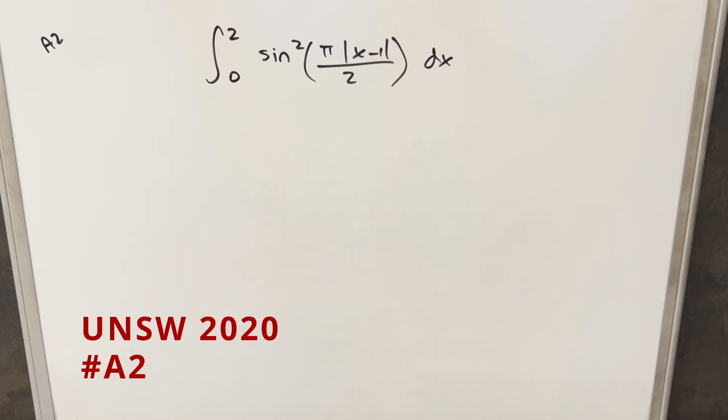Okay, we have here today a really interesting integral from the UNSW integration B 2020 problem A2. We have the integral from 0 to 2 of sine squared pi absolute value x minus 1 over 2 dx.